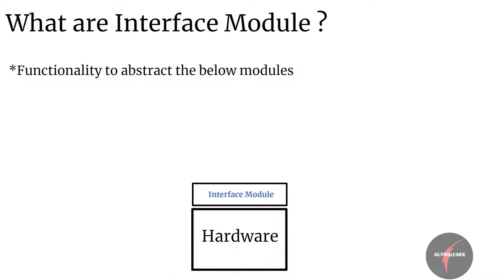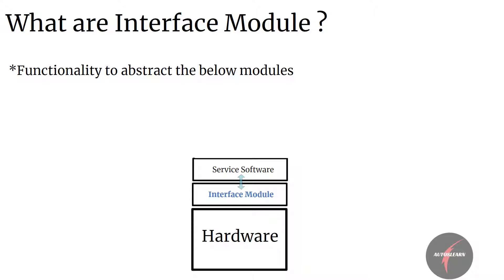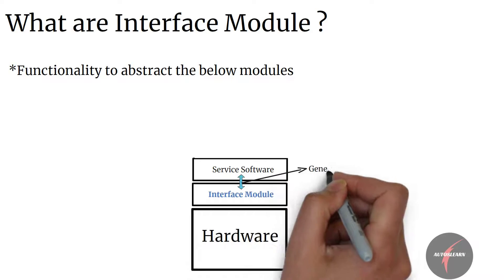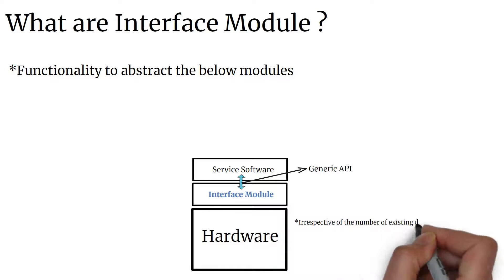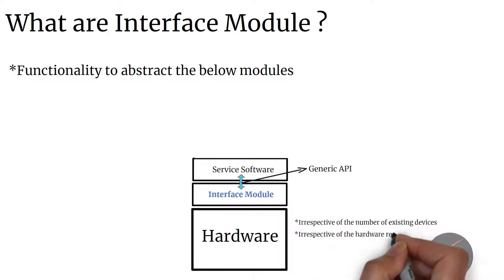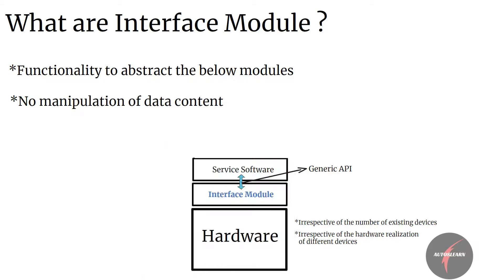For example, an interface module abstracts the hardware realization of a specific device. In general, the interface module would provide a generic API to access a specific type of device, irrespective of the number of existing devices of that type and also irrespective of the hardware realization of the different devices accessed by the API. The rule of thumb is that the interface module shall not manipulate the data content received from below modules.